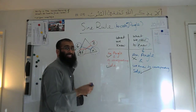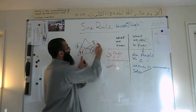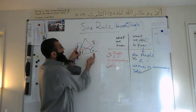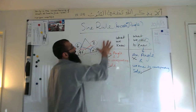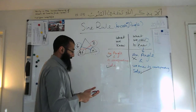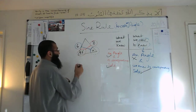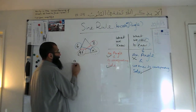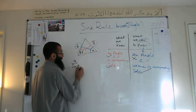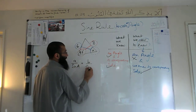Whenever we have a situation where we know one complete set of information and the other set of information is incomplete by one item, then we are looking at the sine rule. Let's have a look at the sine rule: we have little a over sine A is equal to b over sine B.